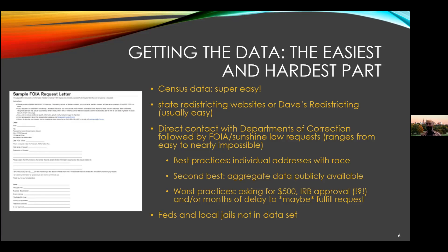The number one way we've been successful is direct contact with someone in the Department of Corrections or Department of Justice at whatever state, simply asking: do you have this data? Is it available to get the addresses of people who are incarcerated in state facilities as of April 1, 2020, which is the day that the census counted group quarters like prisons and jails? Often that has been successful — they said yes, here you go. Sometimes it's been more successful than we imagined, and they gave us specific addresses for everybody who was incarcerated in a state prison. But we then had to geocode that data.